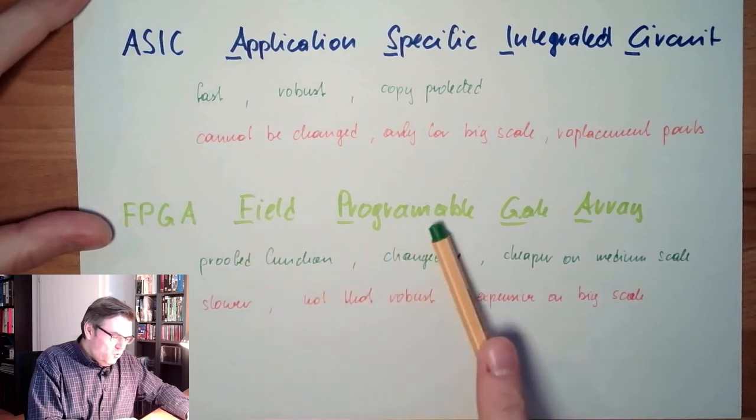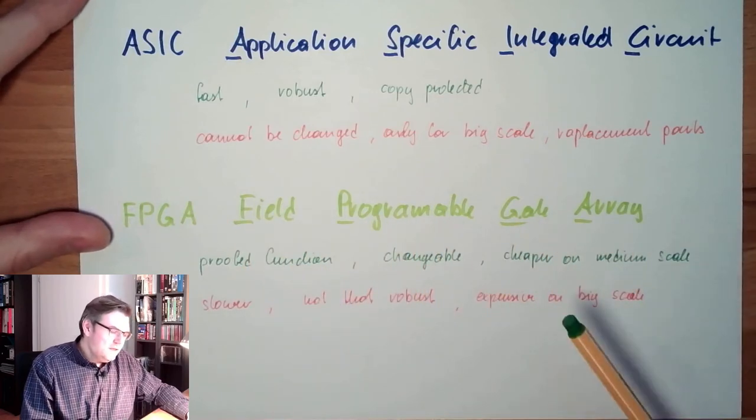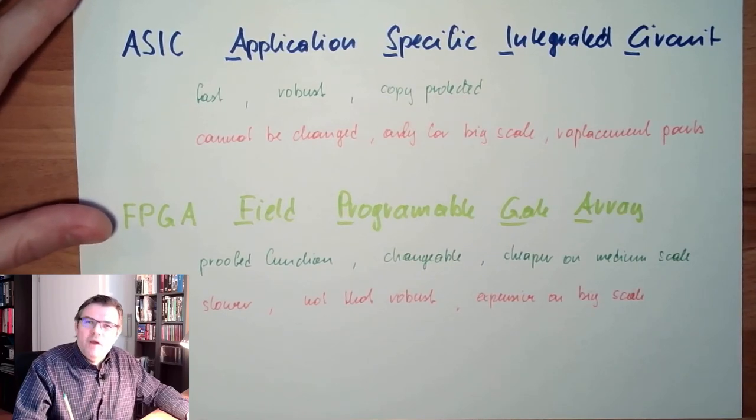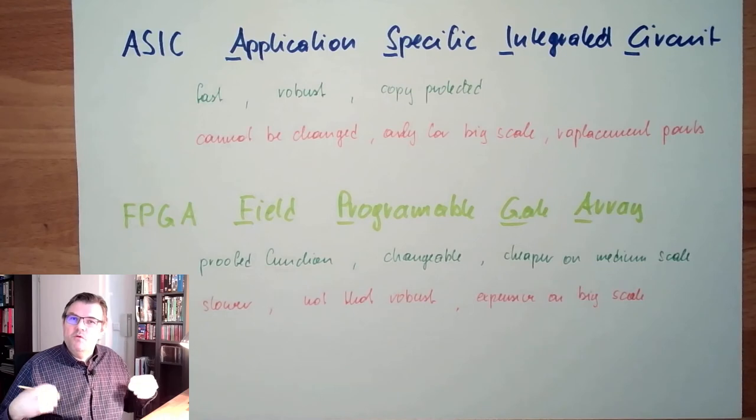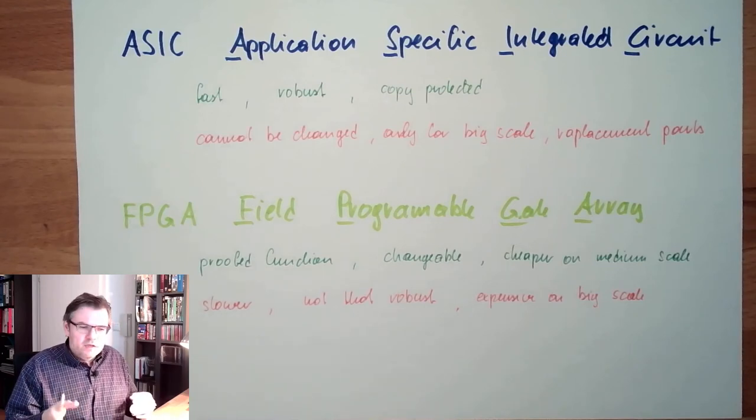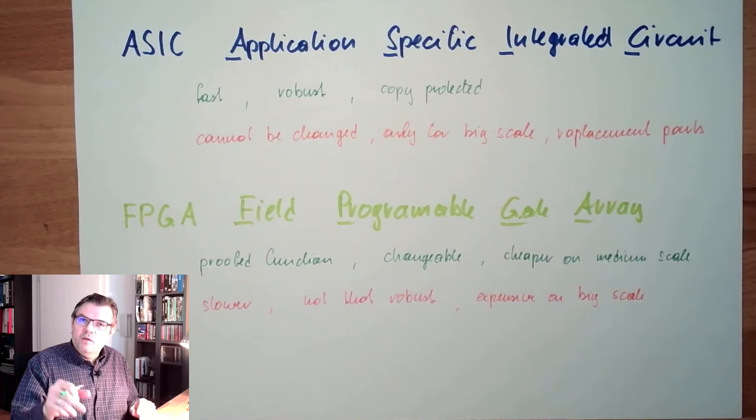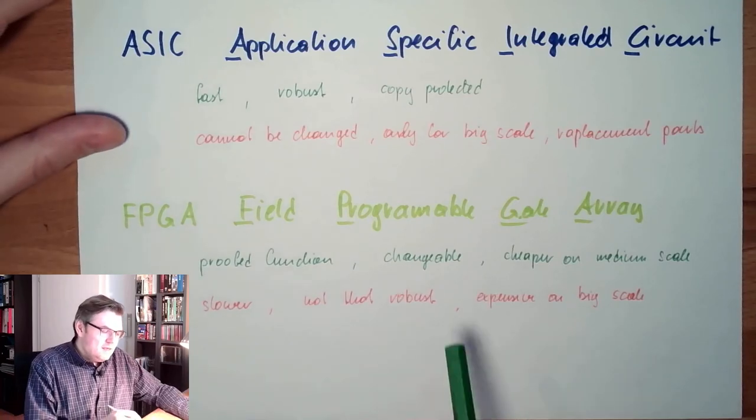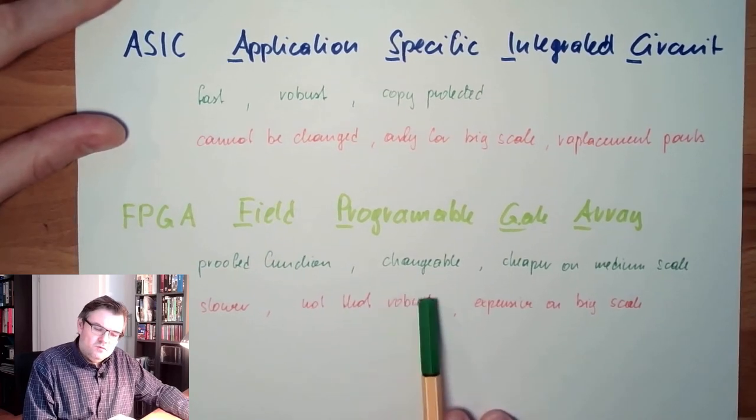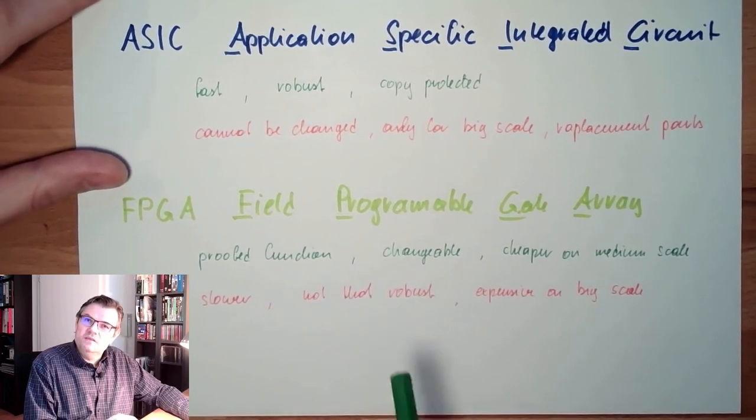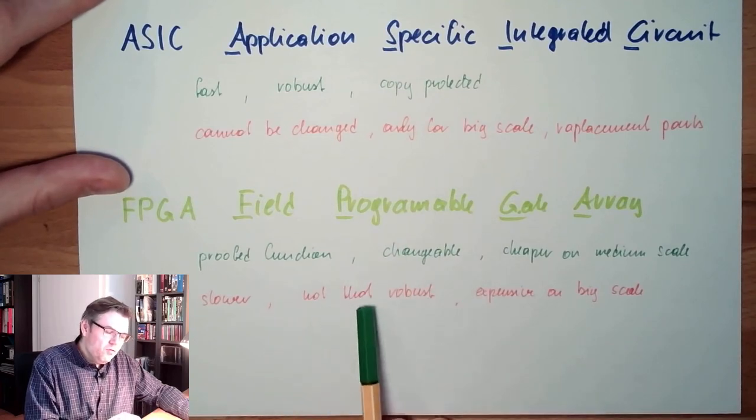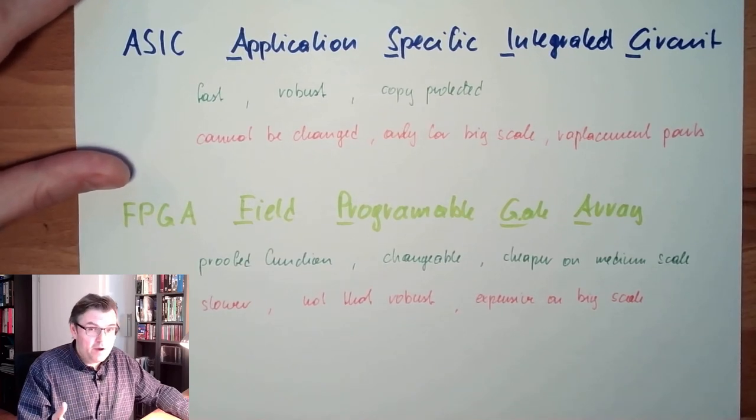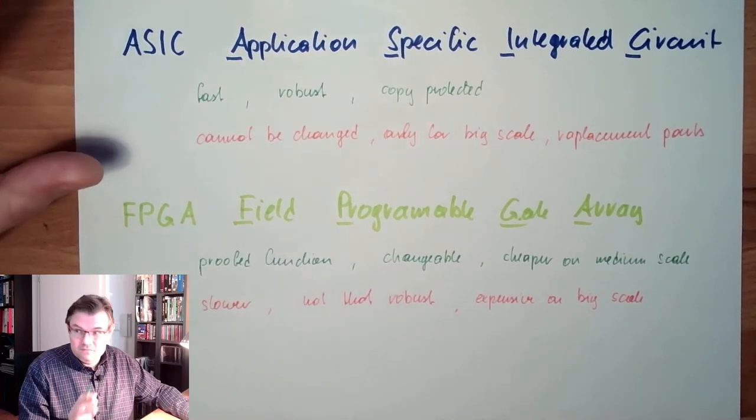Basically there are two different types of field programmable gate arrays. There's one which can be programmed once, or one which can be reprogrammed in the field. The one which can be programmed once - if you're realizing there's an error inside, get it out, program the next one, get rid of the first one. These are more robust to pulses or something like this. The reprogramming ones are not that robust, however you can reprogram them in the field. This is the huge benefit.